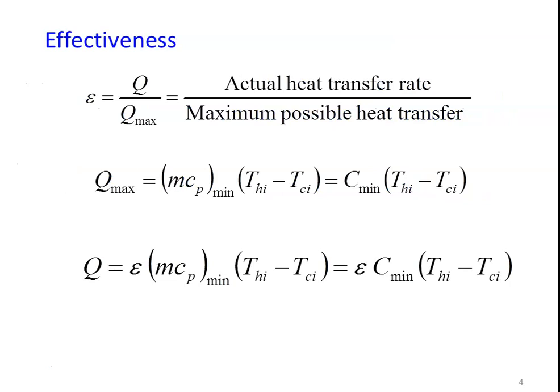We define first the Effectiveness of the Heat Exchanger. Effectiveness Epsilon equals Q divided by Q maximum — the Actual Heat Transfer Rate in a Heat Exchanger divided by the Maximum Possible Heat Transfer. The actual heat transfer is calculated as m·Cp·ΔT for the hot fluid or the cold fluid. Q maximum equals C minimum into the Maximum Possible Temperature Difference, where Thi minus Tci is the maximum possible temperature difference.